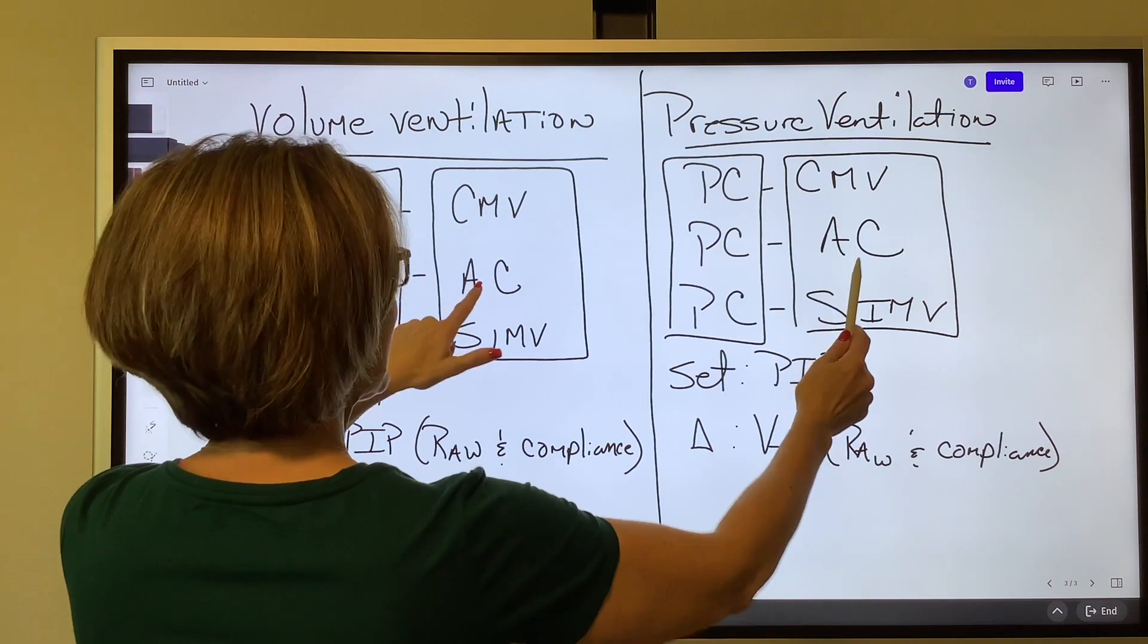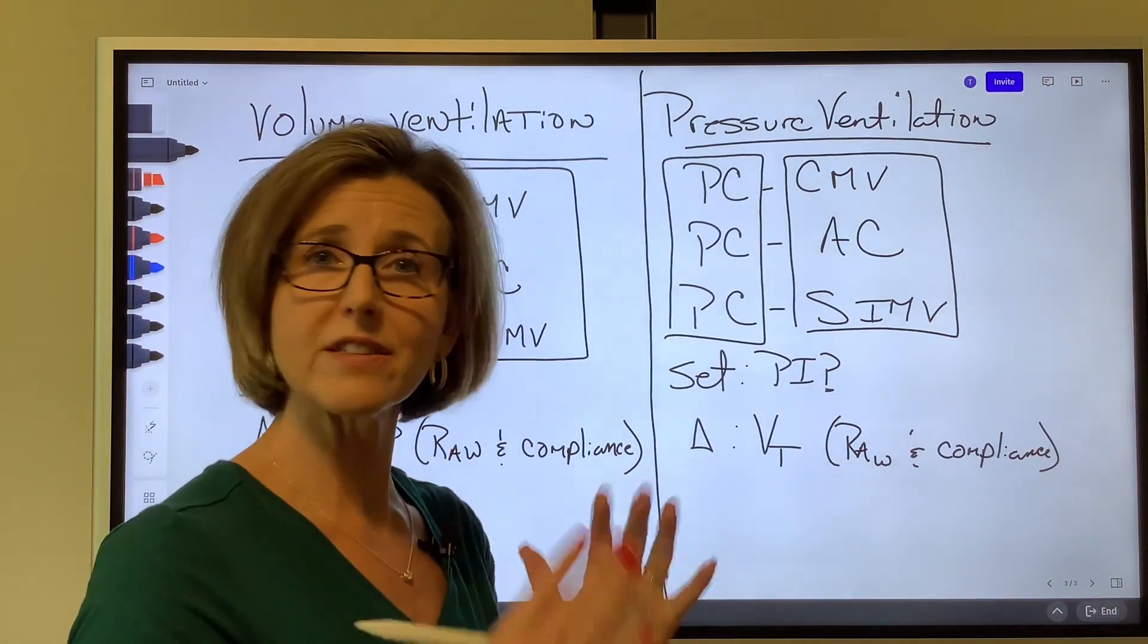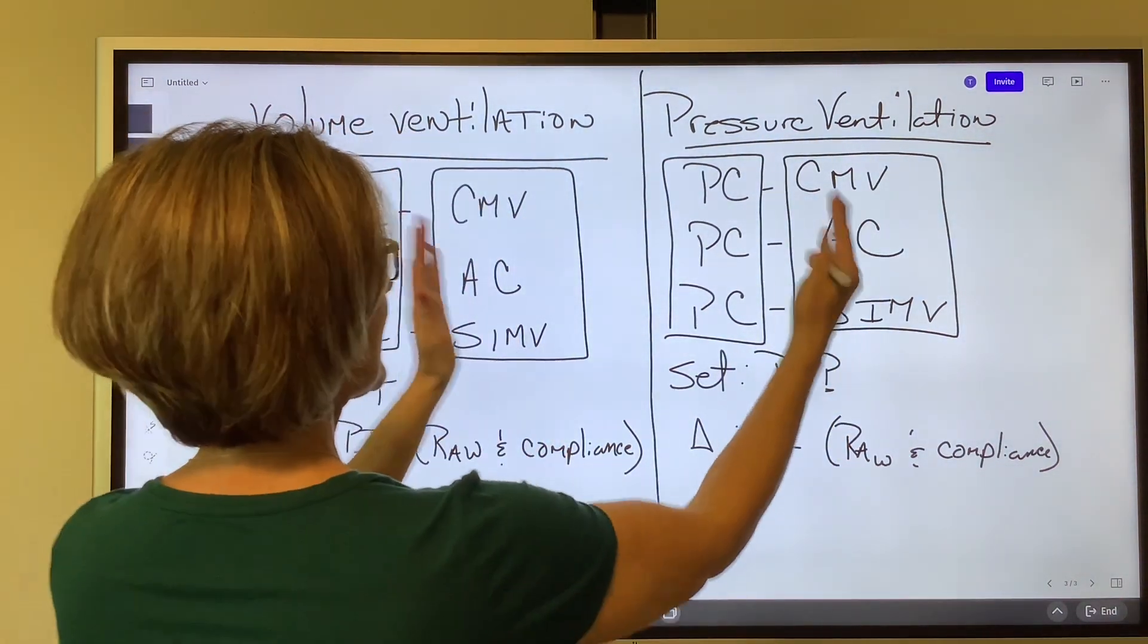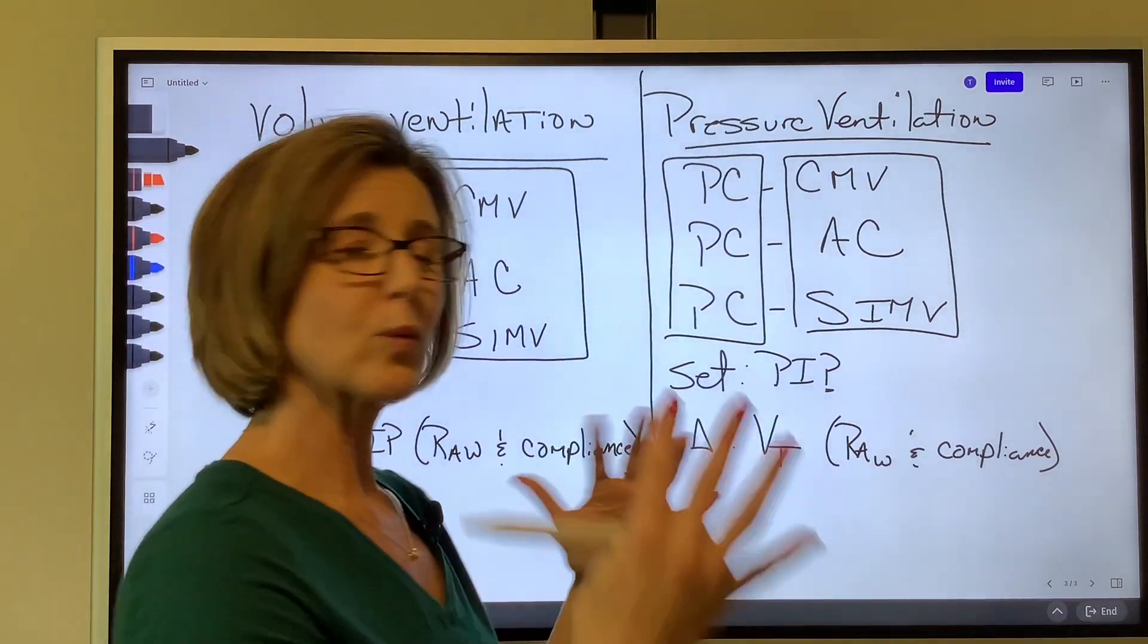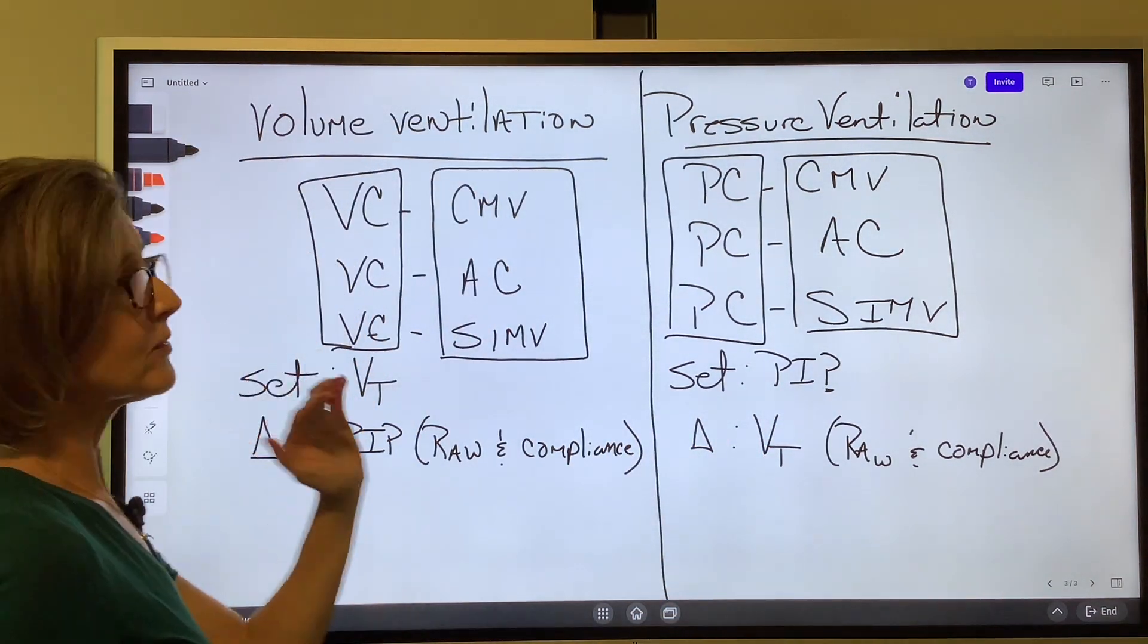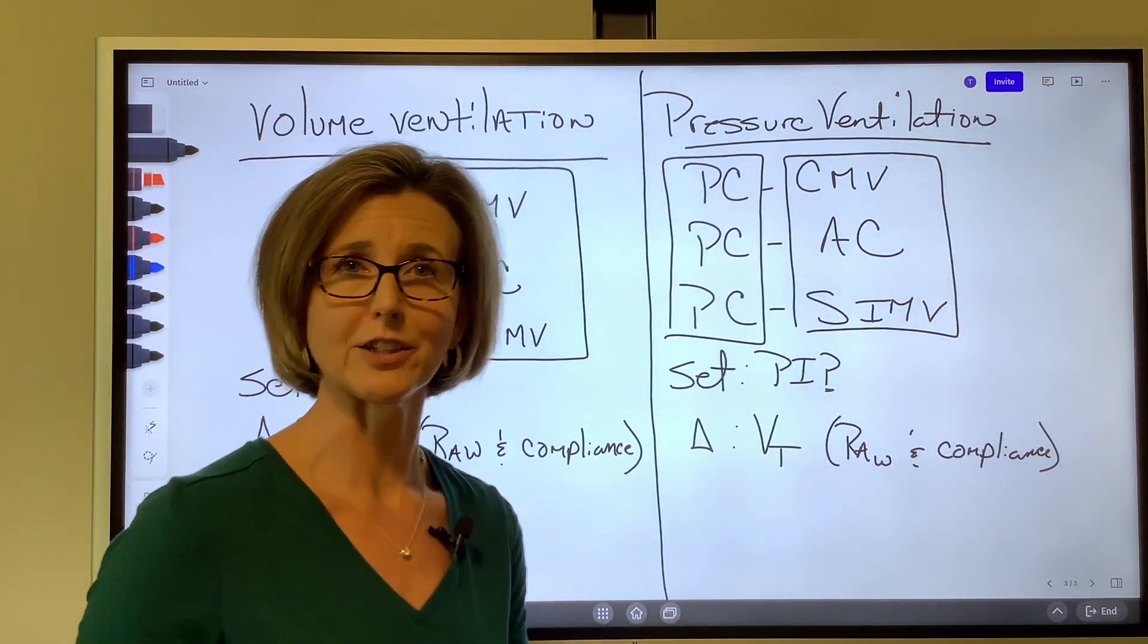So really, CMV, AC, and SIMV are the same thing in each type of ventilation. What really differs is if we're doing volume ventilation or pressure ventilation.